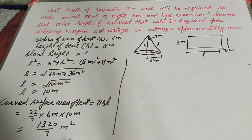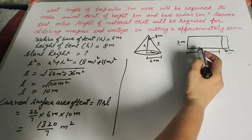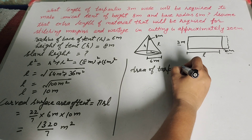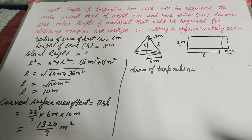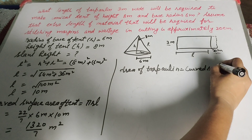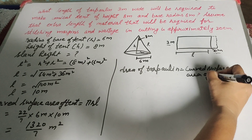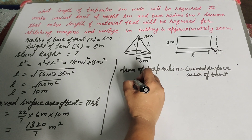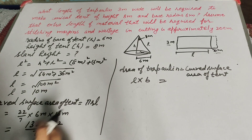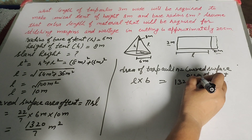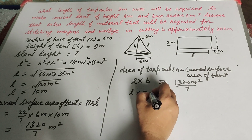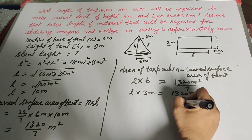Now we find the length of the tarpaulin used to make the tent. The area of the tarpaulin equals the curved surface area of the tent. The area of the tarpaulin is in the form of a rectangle, so it is length multiplied by breadth equals the curved surface area of the tent, which is 1320 meter squared over 7. We find length, and breadth is given as 3 meter, so length times 3 equals 1320 meter squared over 7.